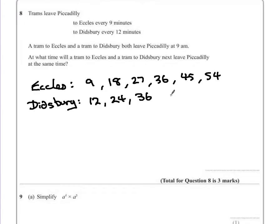Now while this would continue, we found a time where both trams leave at the same time, which is 36 minutes past. And this is our lowest common multiple of the two times, 36 minutes. But the question asked us at what time will they next leave Piccadilly. So we just have to add 36 minutes onto this, which will give 9:36am.